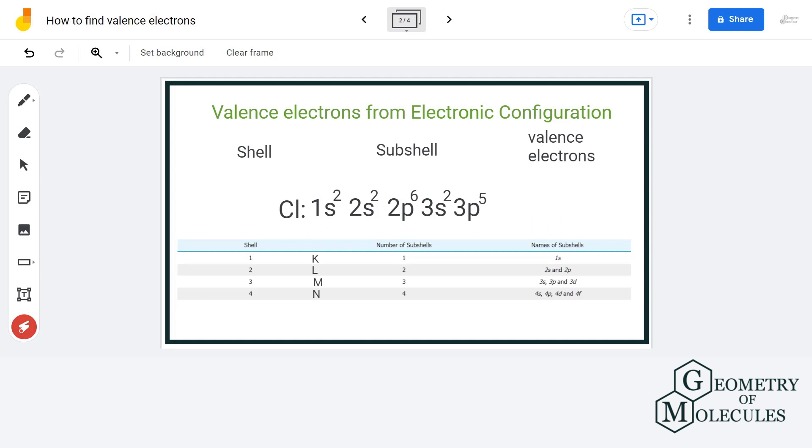Let us understand it with an example. Here is the electronic configuration of chlorine in which the last electron goes in 3p subshell. So the mistake that is commonly made is that we write down the valence electrons as 5, which is incorrect. 5 is the number of electrons in the last subshell and not the shell.